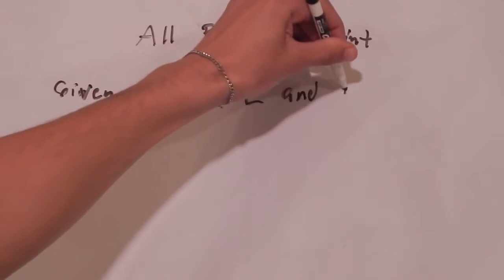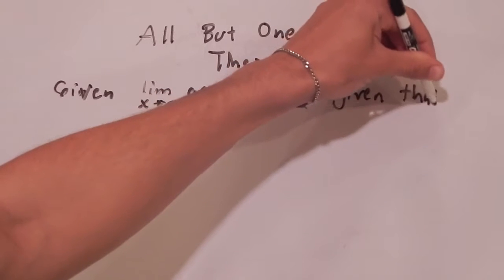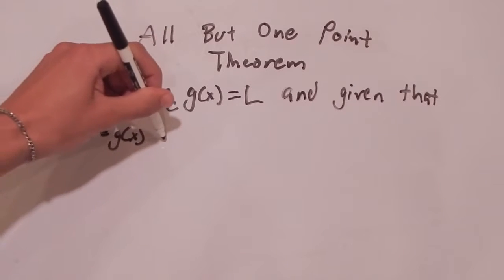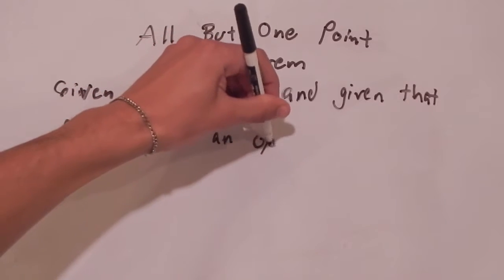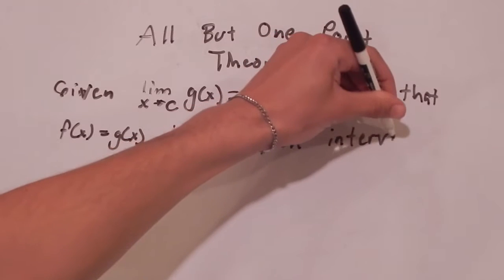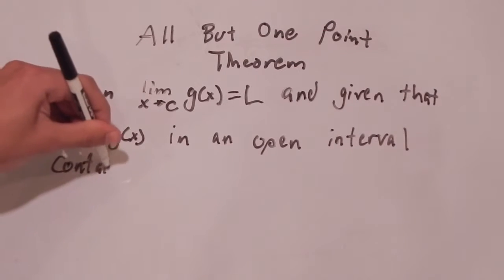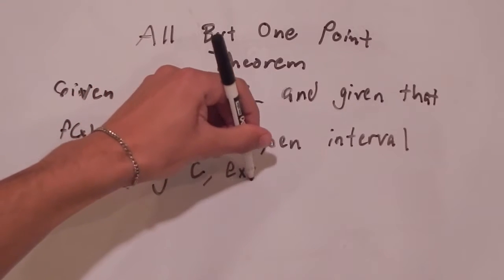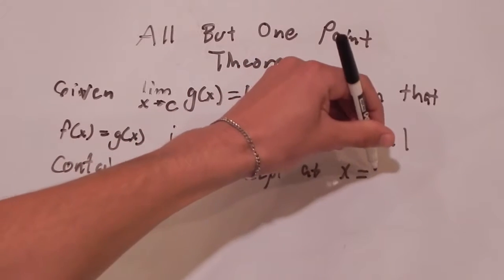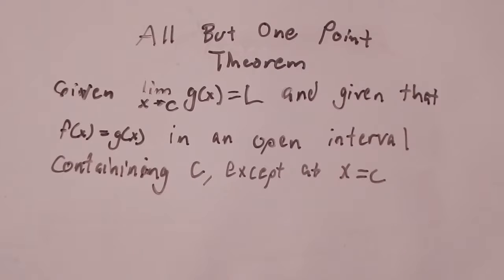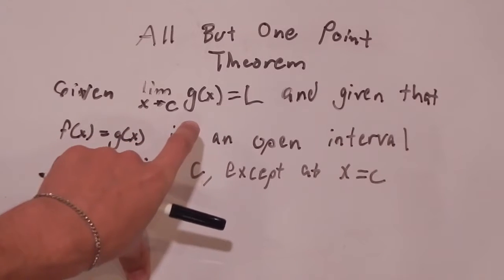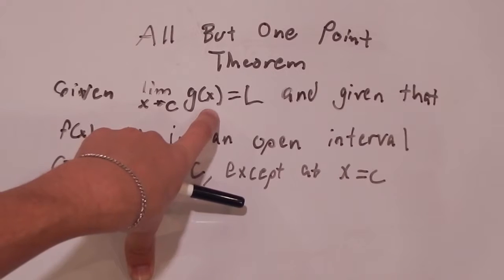And given that F of X is equal to G of X in an open interval containing C, C being a real number except at X equals C. Now what exactly does this mean? We're going to slow down and take a look at each of the givens. So our first given is basically saying that this limit exists. It is equal to some real number and it has epsilon delta consequences that we're going to take a look at in our proof in just a few minutes.